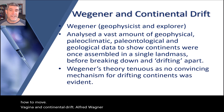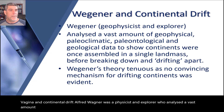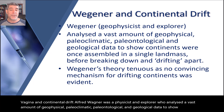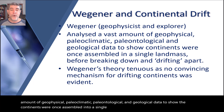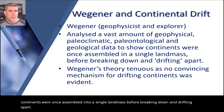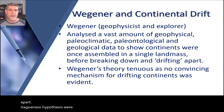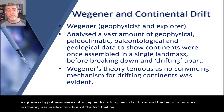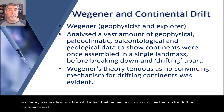Alfred Wegener was a physicist and explorer who analysed a vast amount of geophysical, paleoclimatic, paleontological and geological data to show the continents were once assembled into a single landmass before breaking apart and drifting away. Wegener's hypotheses were not accepted for a long period of time, and the tenuous nature of his theory was really a function of the fact that he had no convincing mechanism for drifting continents. And this was a major problem.